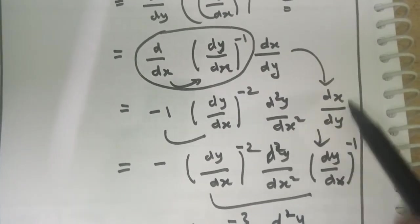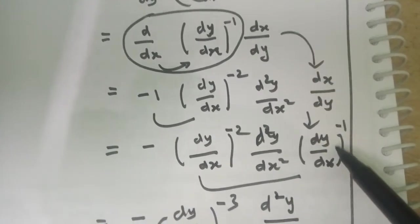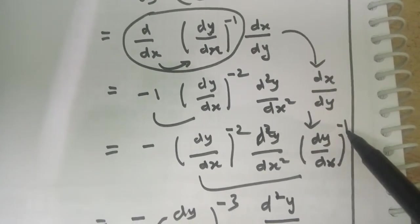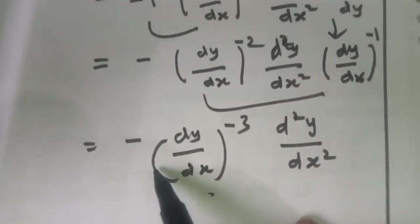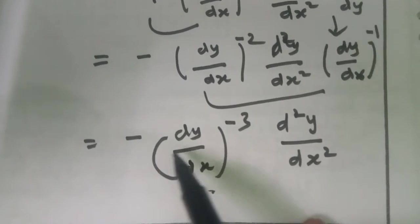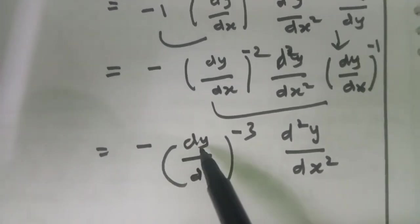Next step, we write dx/dy reciprocally. We get -1 times (dy/dx)^(-1). Simplifying, you are getting the answer d²y/dx² times -(dy/dx)^(-3).